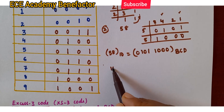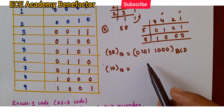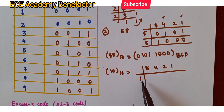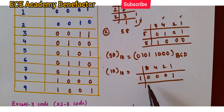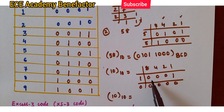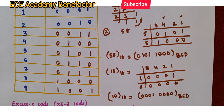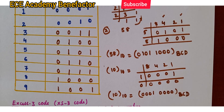How to write 10 decimal in BCD? For 10, we write the 8421 BCD code separately for each digit: for 1, we keep the 1-position as 1 and all other digit positions are 0; for 0, all are 0. So, for 10 decimal, the BCD is 0001 0000. This is the BCD number. In this way we can write the BCD numbers for given decimal numbers.